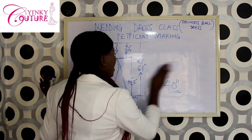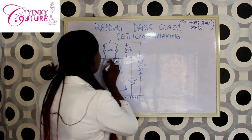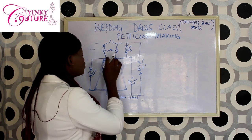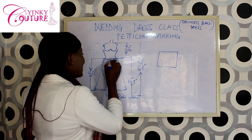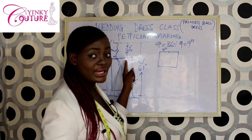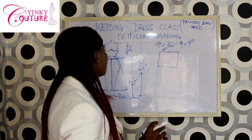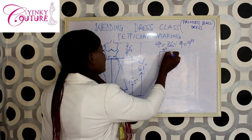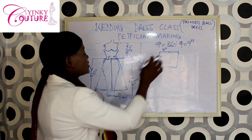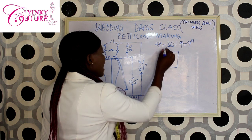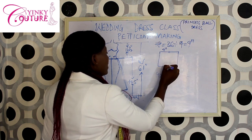The next thing is to calculate the measurements on the petticoat. On the waist we are going to divide it into four panels — two panels at the front and two panels at the back. The measurement we are using for the waist will be the hip circumference, because we are going to put an elastic rubber on the waist. So if we divide the waist into four panels, we have nine inches per panel. The downside must be wider than the upper part, so we multiply that nine inches by three, giving us 27 inches at the hem.